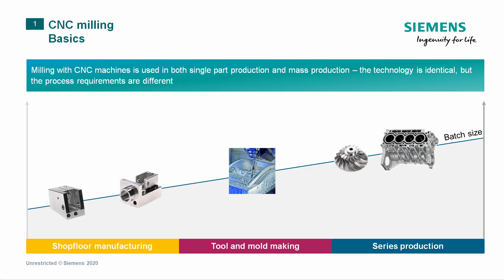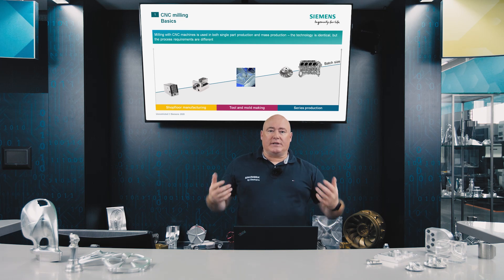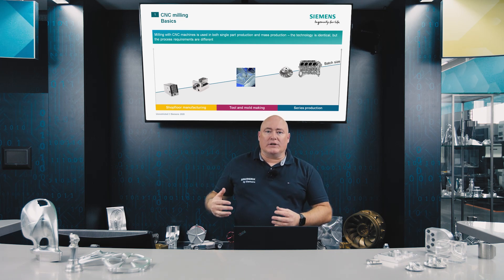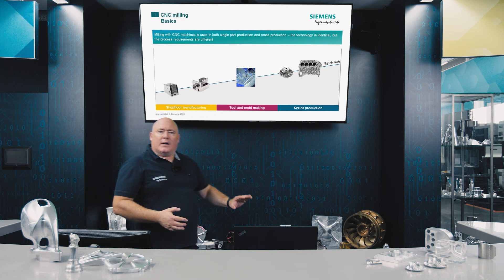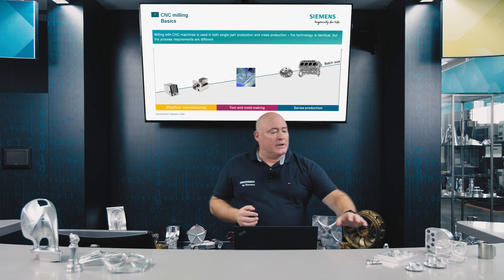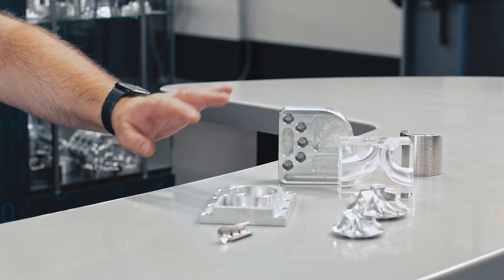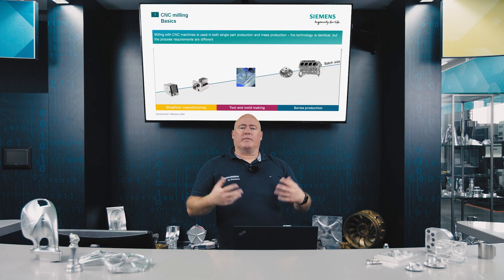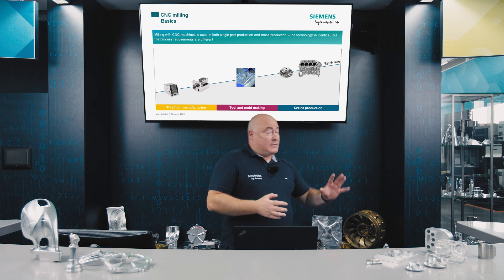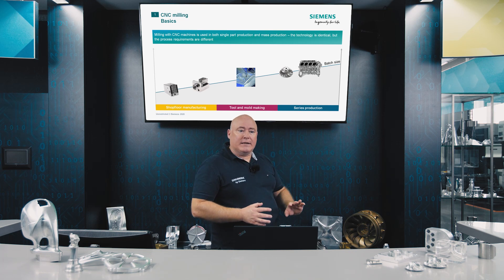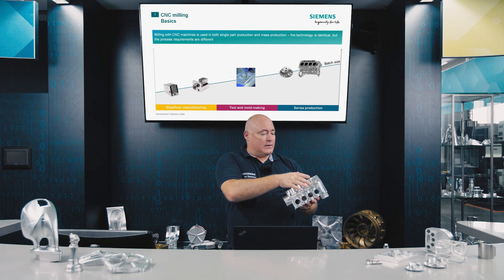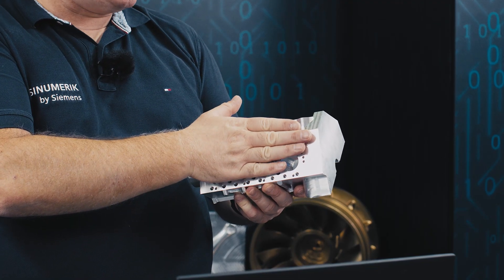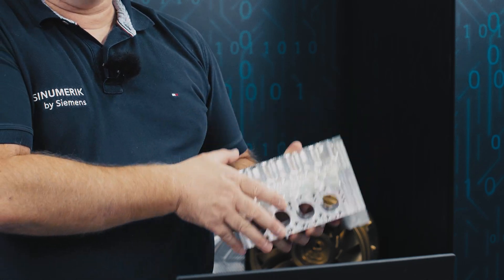A milling operation with CNC machines is used both for single part production and for mass production. The technology is identical, but the requirements for the production process differ. In job shop production, the focus is on planar programming — planar machining for 2.5D contours — these are contours and shapes of manageable complexity. In series production, we also have planar operations but with considerably more sequences, resulting in highly technical components requiring a very high degree of automation and maximum efficiency.